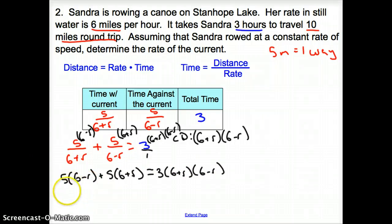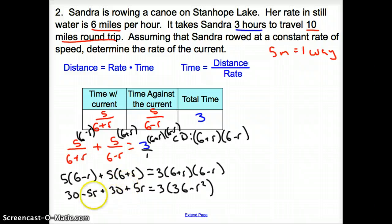Since we have the same common denominators, we can just chop off the common denominators and look at the top. We have 5 times 6 minus R plus 5 times 6 plus R, and here we have equals 3 times 6 plus R times 6 minus R. Let's distribute everything. Here with this 5, I have 30 minus 5R plus 30 plus 5R equals, I'm going to multiply everything in the parentheses first, so it's 3 times 36 minus R squared.